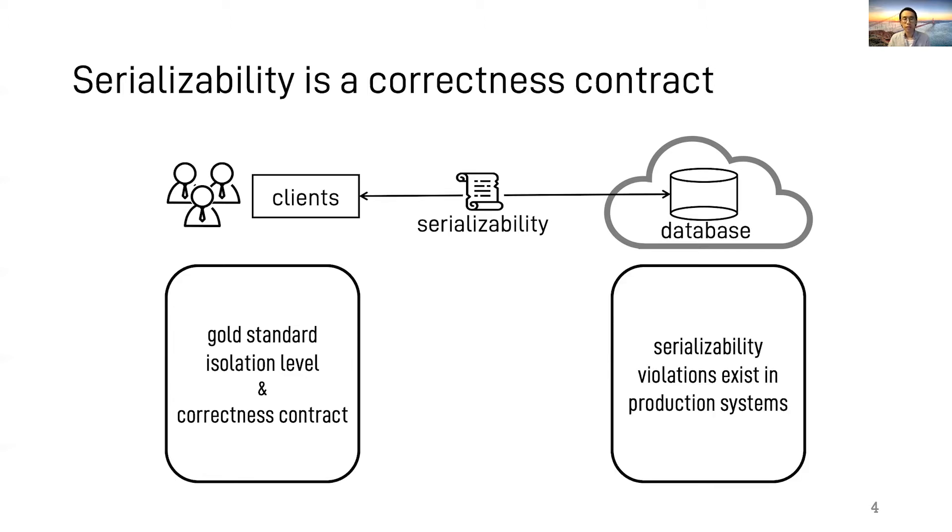Meanwhile, today's production systems, even the ones that claim to support serializability, do exhibit serializability violations. And this makes sense because it is hard to provide serializability with all the properties including geo-replicated, geo-distributed, fault tolerance, high performance, scalability, and so on.